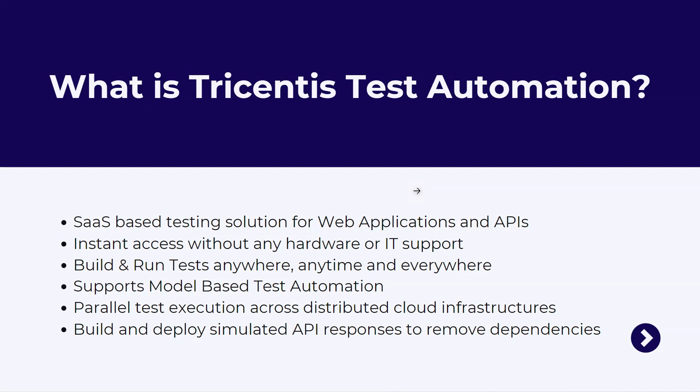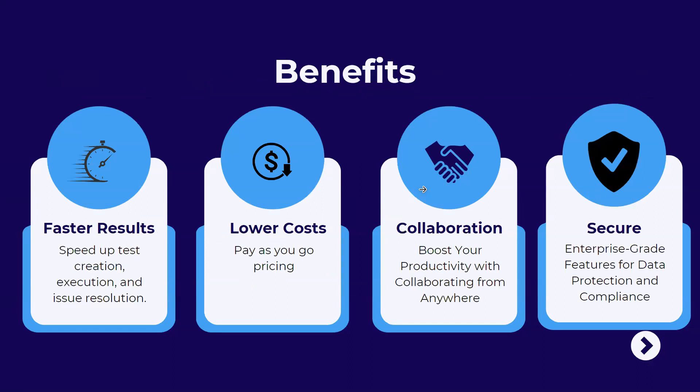Tricentis Test Automation provides a feature where you can build and deploy simulated API responses, so you are not dependent on the actual APIs being available while testing. You can build and deploy a simulation of the APIs your application runs on, isolating your environment from issues like server downtime or development team changes — essentially creating a replica of the actual application environment.